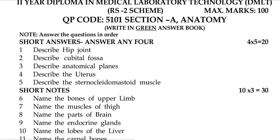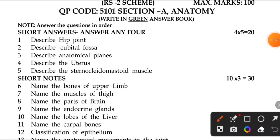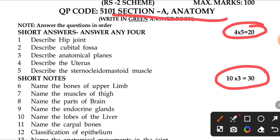This is anatomy and physiology. Section A is about anatomy and physiology. It shows 5 marks and 4 marks. Here we are going to talk about the short answers and short notes.